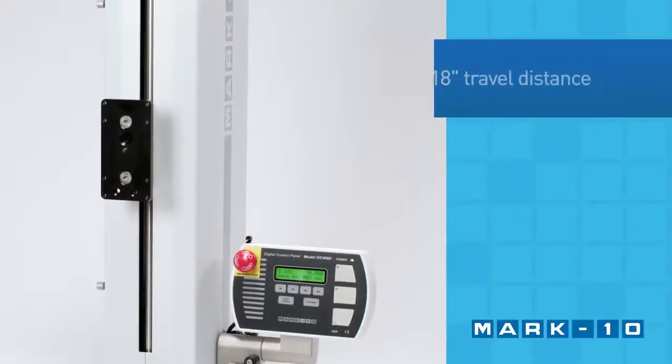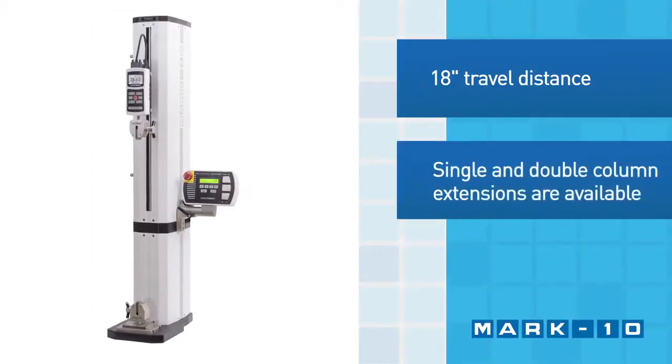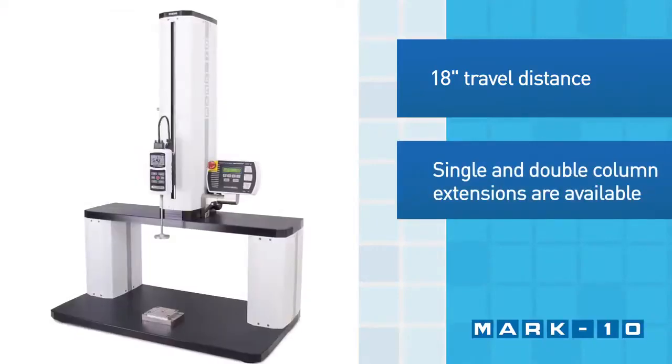The ESM 303 has a generous 18-inch travel distance. The clearance can be increased via single-column extensions or double-column extensions.